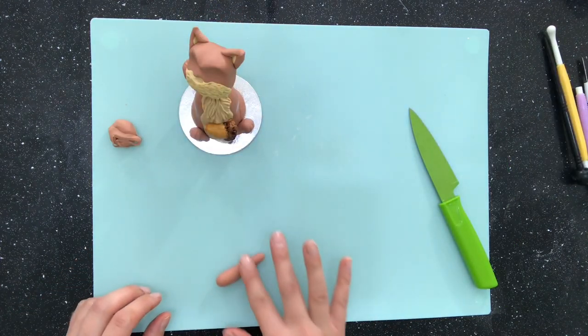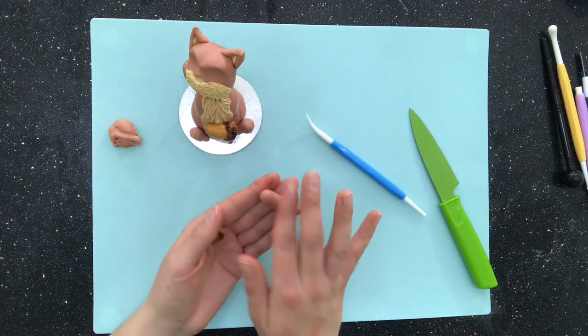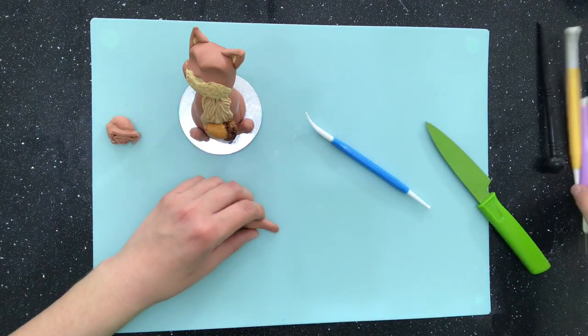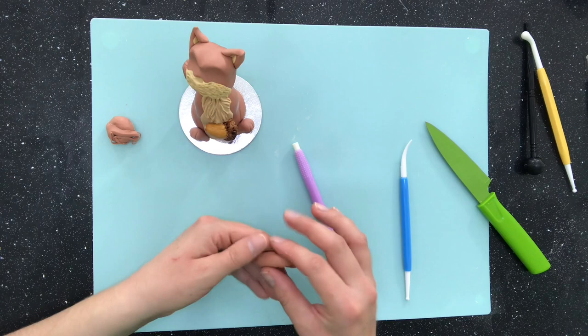The arms are quite basic. I roll out a cord that is thinner at one end and create a slight bend for the elbow. I flatten out a hand and stick it in place, then I just add some fur lines to the back of the arms.